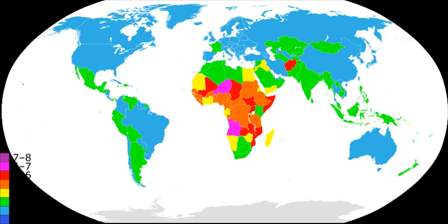As early as 1798, Thomas Malthus argued in his essay on the principle of population for implementation of population planning. Around the year 1900, Sir Francis Galton said in his publication Hereditary Improvement, '...the unfit could become enemies to the state, if they continue to propagate.'